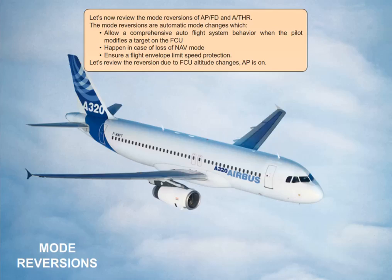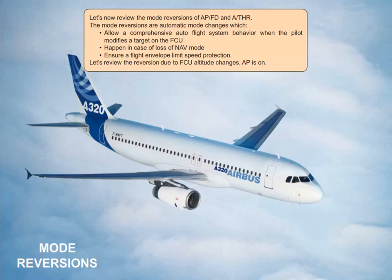Let's now review the mode reversions of Autopilot Flight Director and Autothrust. The mode reversions are automatic mode changes which allow comprehensive autoflight system behaviour when the pilot modifies a target on the FCU. They happen in case of loss of navigation mode and ensure a flight envelope limit speed protection. Let's review the reversion due to FCU altitude changes.